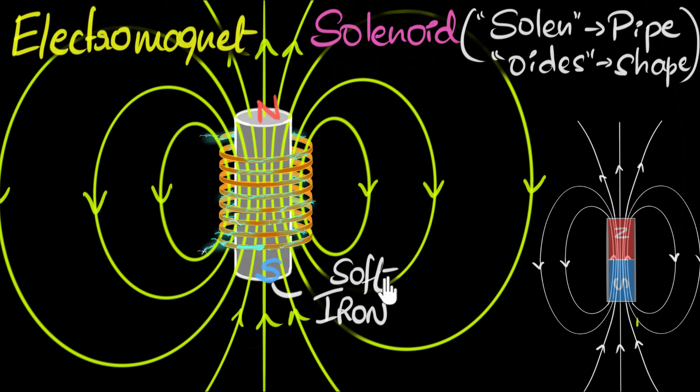But soft iron, the word soft here does not mean it's soft like a pillow. Soft irons are kind of irons that can be easily magnetized, and when you switch off the current, they will easily demagnetize. They're sort of like temporary magnets. That's what we need over here for electromagnets, right?